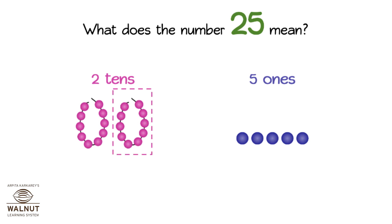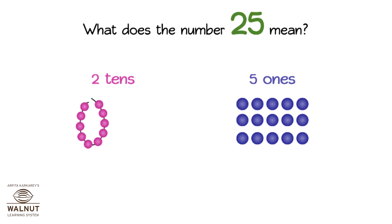what happens? One ten becomes ten ones. We are left with one ten and we have 15 ones. So the number is still 25 — we have just split it differently.